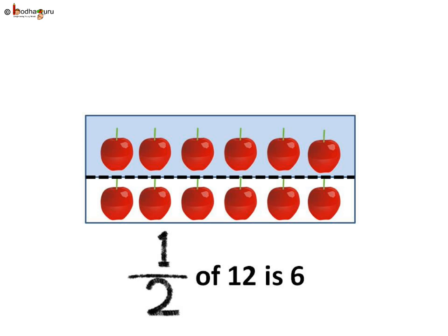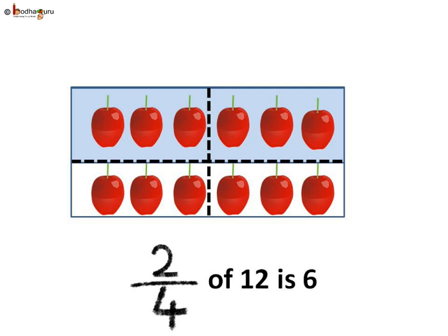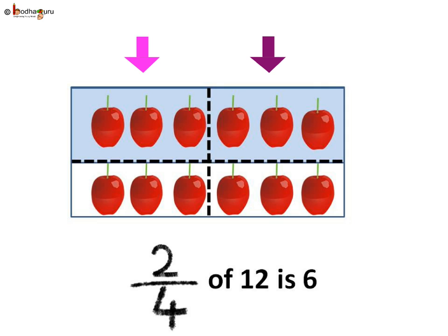If we take half of a collection, say a bunch of twelve cherries, then it is six cherries, as twelve divided by two is six. So half of twelve is six. Also, if we make four parts of twelve cherries, then each part has three cherries. If we take two parts — that is, two by four — then again we take six cherries only, because two times three equals six.